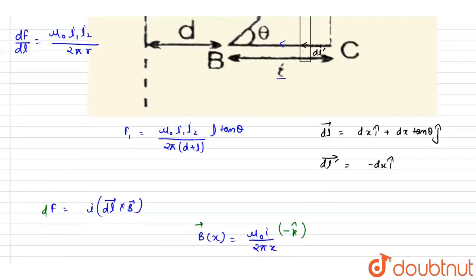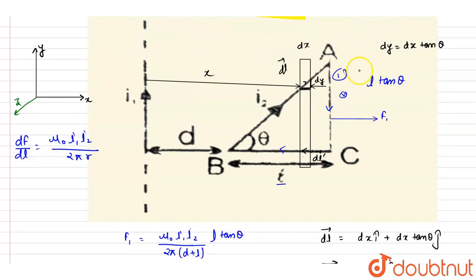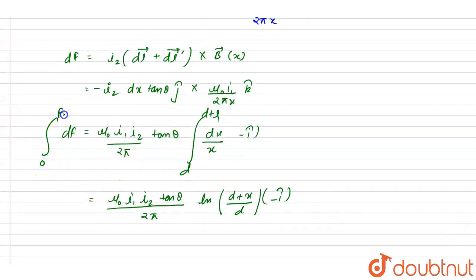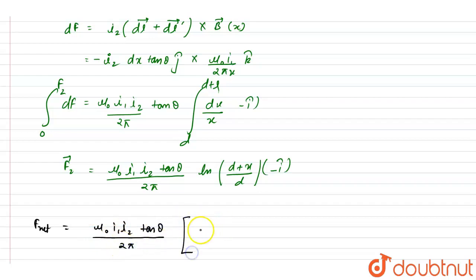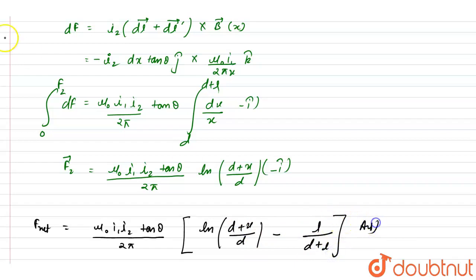We already found that the force on AC was f1 in the positive i cap direction. Now just add the two forces. Since f1 and f2 are antiparallel they subtract, and the net force magnitude is mu naught i1 i2 tan theta divided by 2 pi, times ln of (d plus l) over d, and this is the answer.